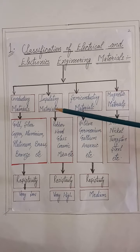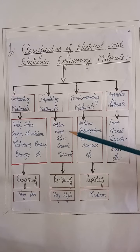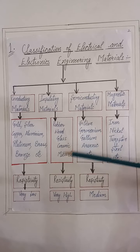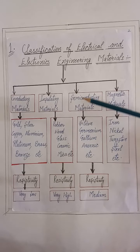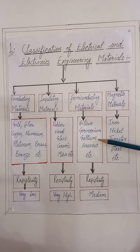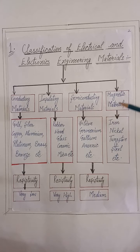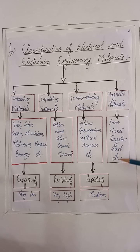Insulating materials are rubber, wood, glass, ceramic, mica, etc. Semiconducting materials are silicon, germanium, gallium, arsenic, etc. Magnetic materials are iron, nickel, tungsten, steel, etc.